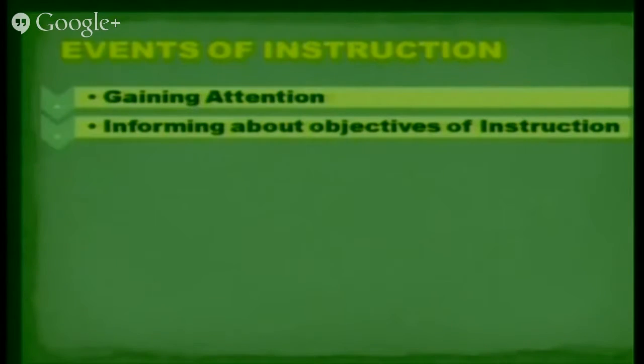The second event is informing students about the objectives of instruction. When you enter the class, students want to know why they are there. After giving them a reason for learning, inform them about the objectives of your presentation. For example: 'After this session, you will be able to explain the concept of instructional planning, explain the advantages of preparing a plan, and focus on determining what to teach and how to teach.' These objectives should be written as small bullets on the chalkboard or PowerPoint presentation.